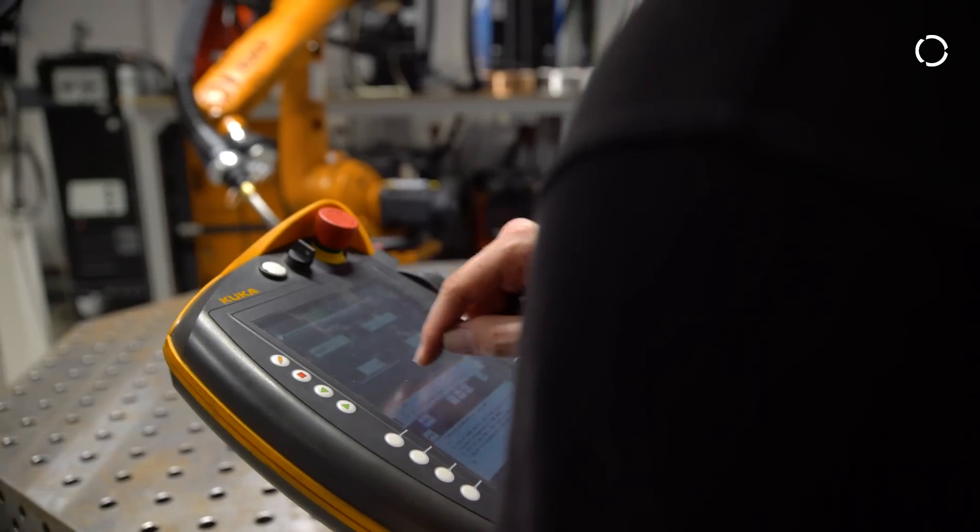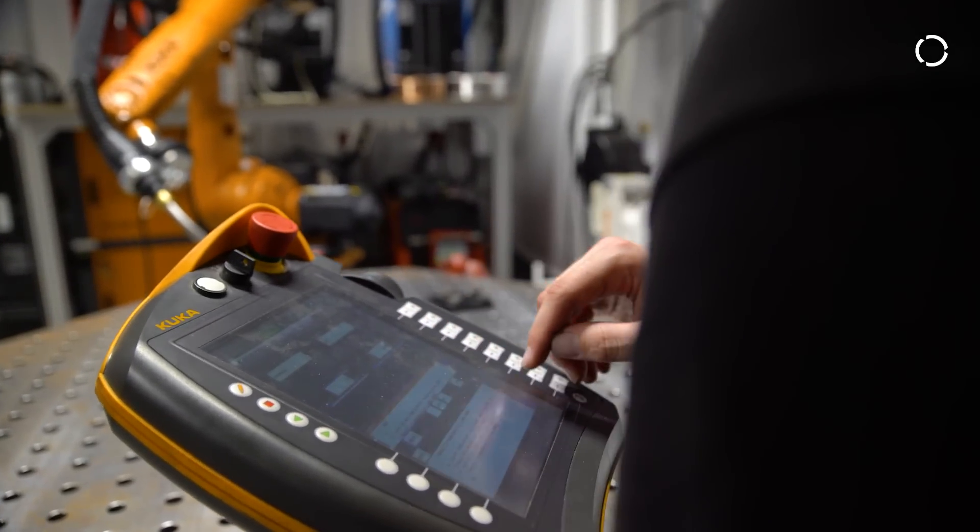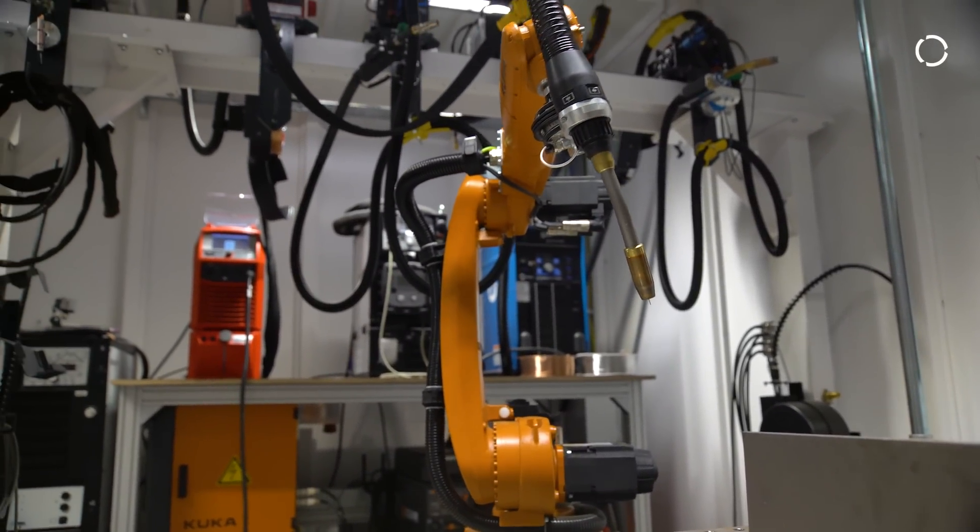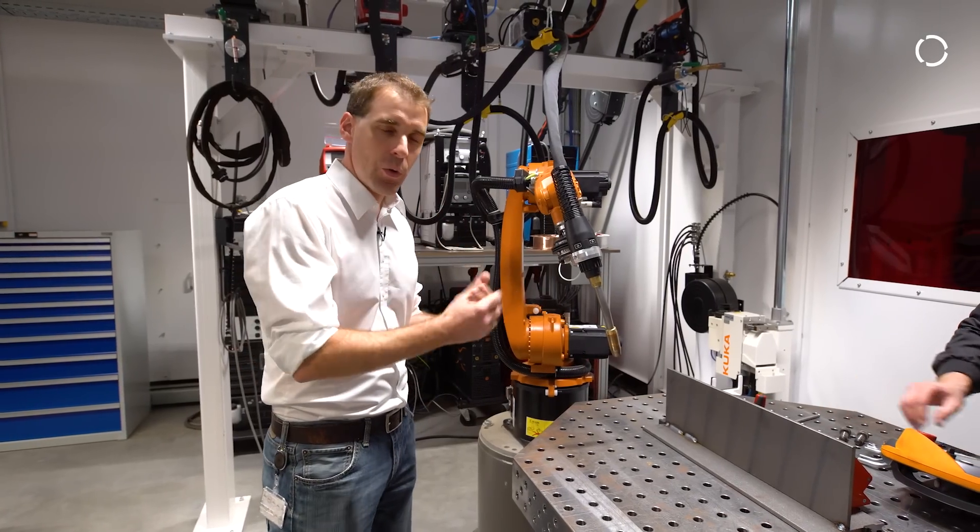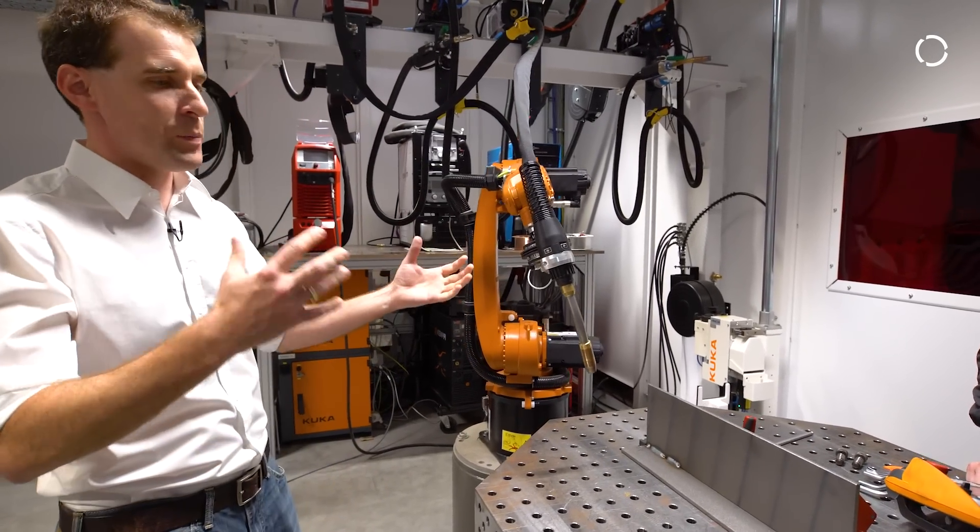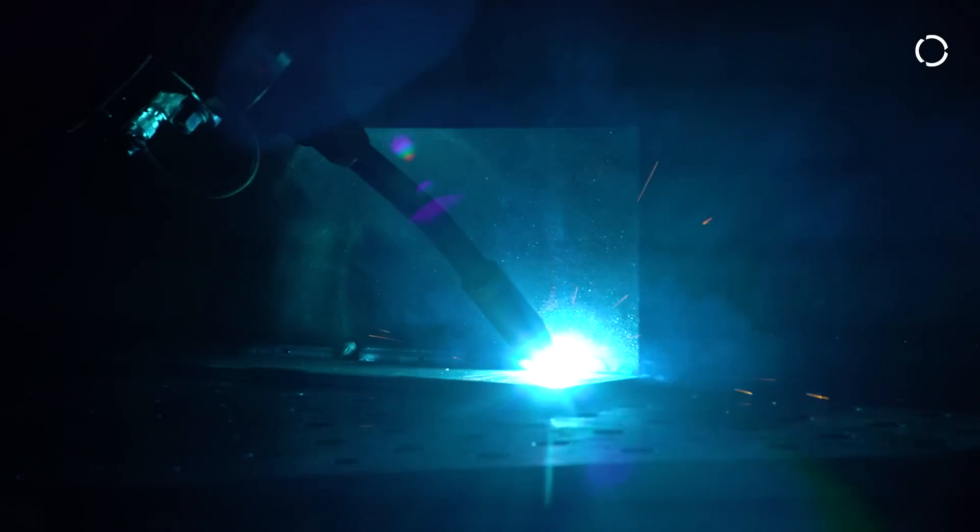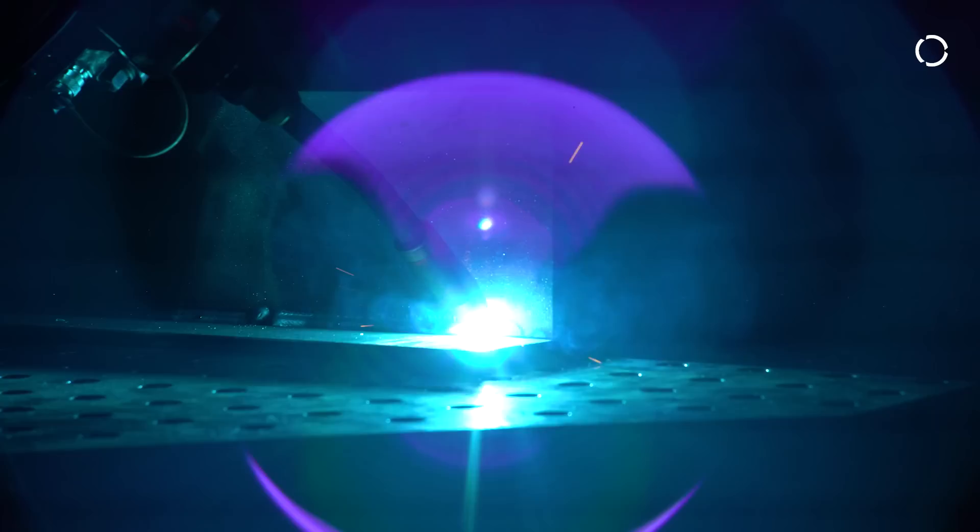We can also demonstrate different welding applications based on different welding equipment and robotic sensors. We have through-the-arc seam tracking and touch sensing. All this we can demonstrate to show and prove to the customer all our functionalities and benefits of our KUKA product.